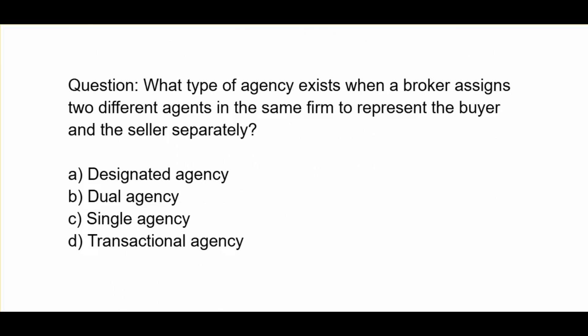What type of agency exists when a broker assigns two different agents in the same firm to represent the buyer and the seller separately? A. Designated agency. B. Dual agency. C. Single agency. D. Transactional agency.